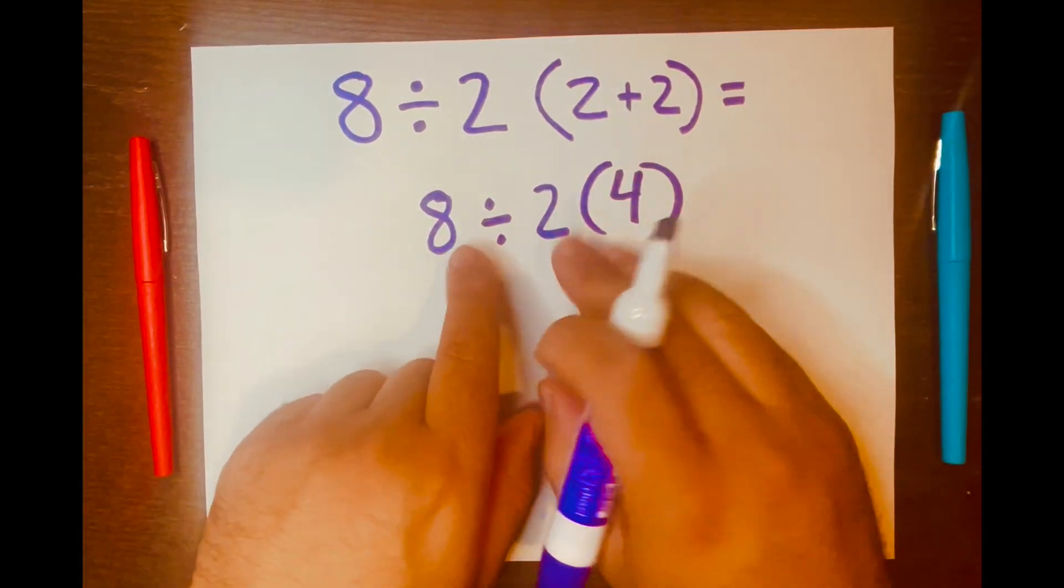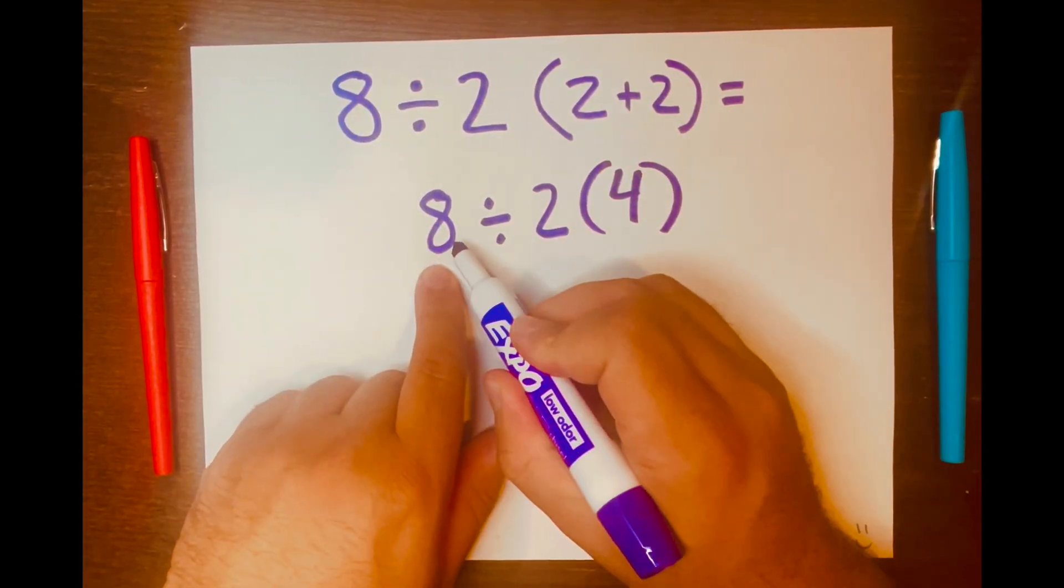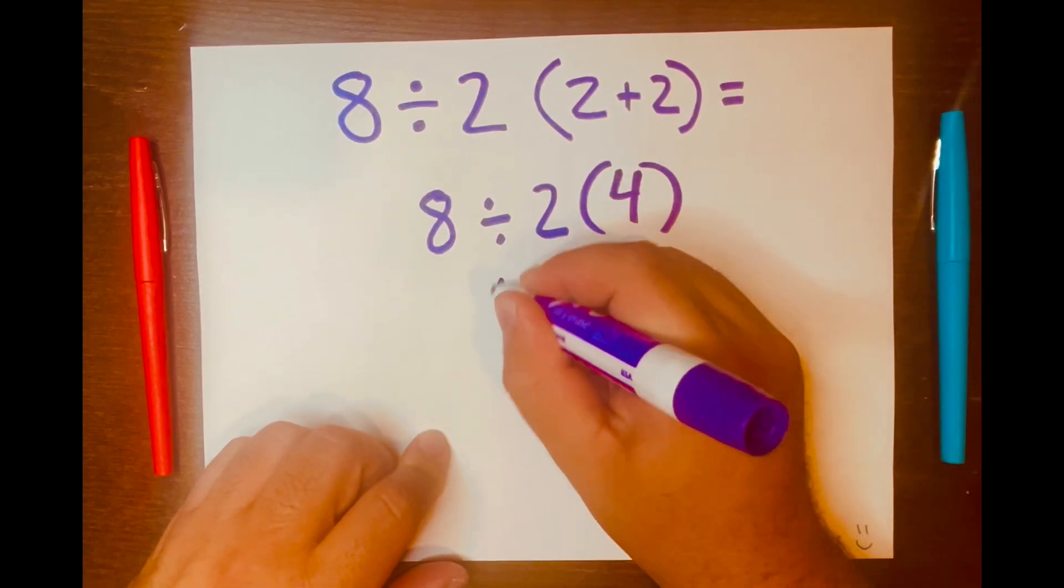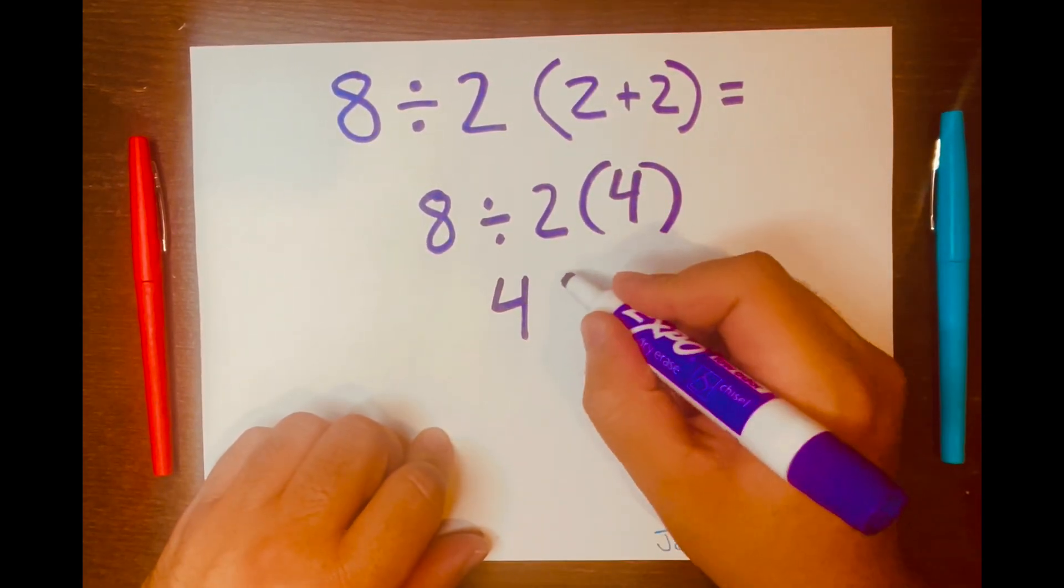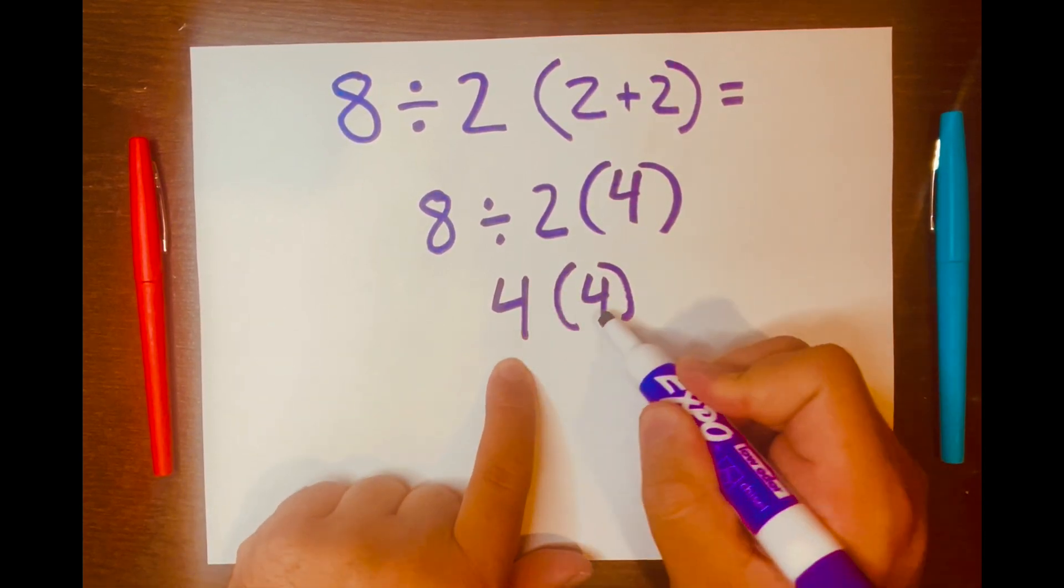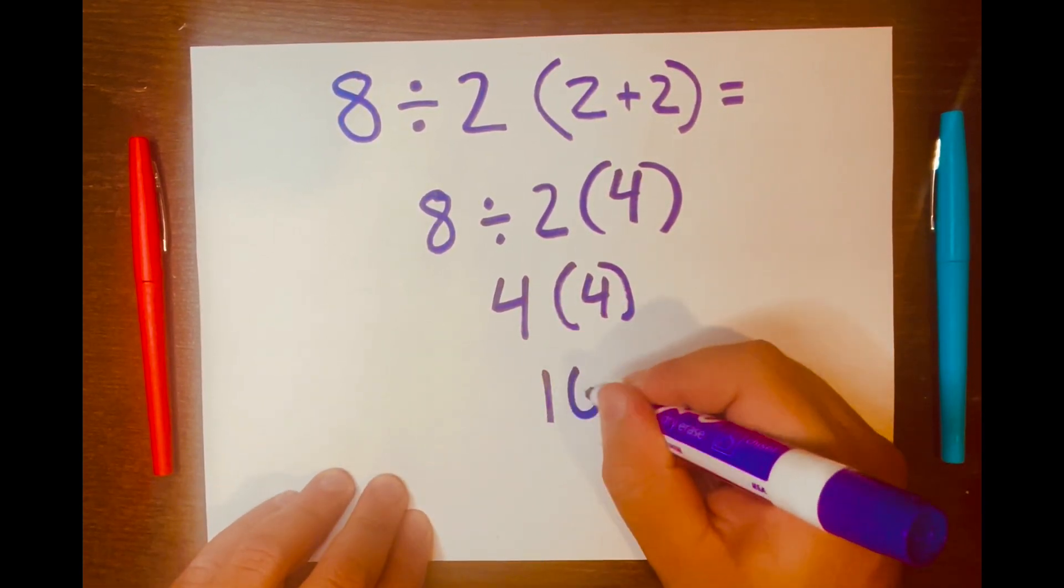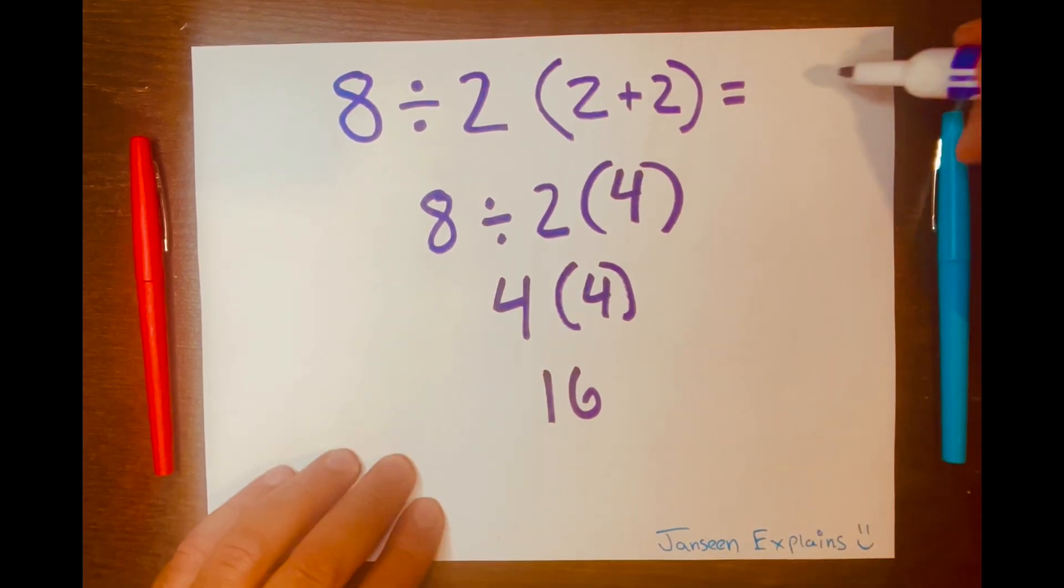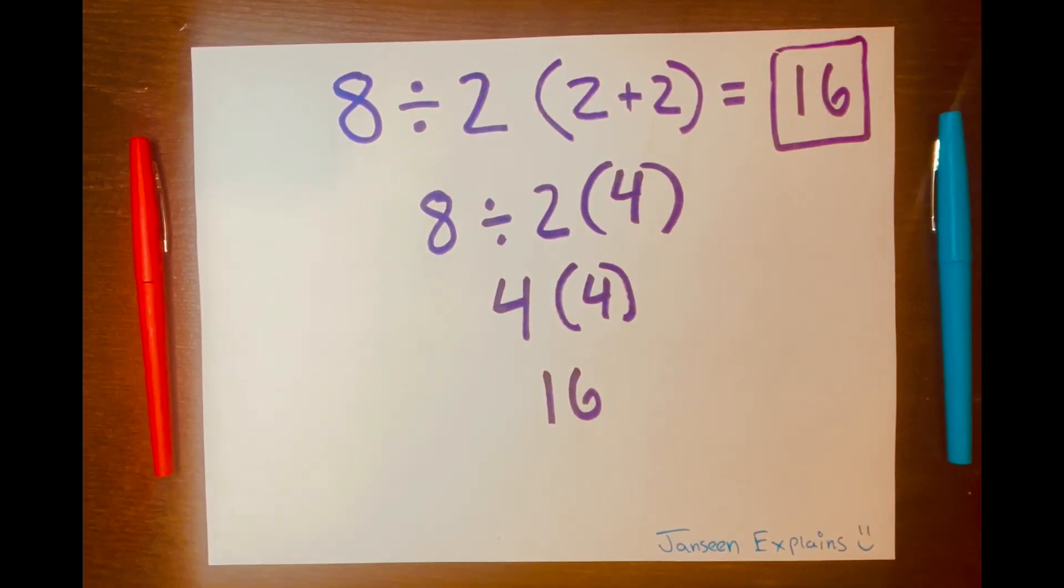So 8 divided by 2 is 4, and then bring down that 4 with the parentheses, and now you multiply 4 times 4 which is 16. So your answer is 16, and there you go.